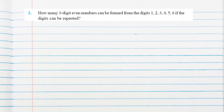Question 2: How many three-digit even numbers can be formed from the digits 1, 2, 3, 4, 5, 6 if the digits can be repeated? That means repetition of the digit is allowed.